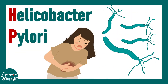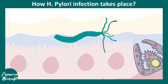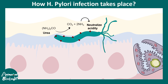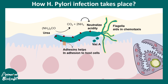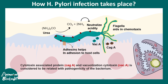Next we talk about Helicobacter pylori, or H. pylori — not a virus but a bacterium. H. pylori attaches to gastric epithelial cells and produces ammonia from urea, neutralizing the acidity in the stomach. It has specific adhesion proteins and secretes cytotoxins like VAC-A and CAG-A, which are considered key to the pathogenicity of the bacterium.